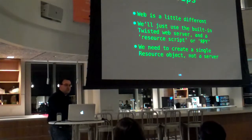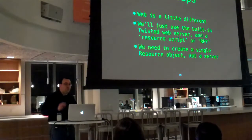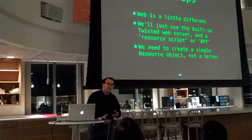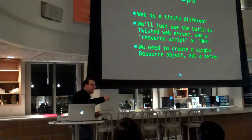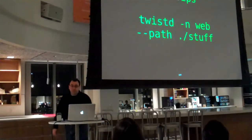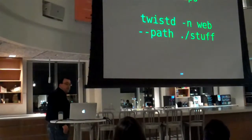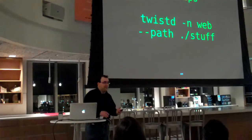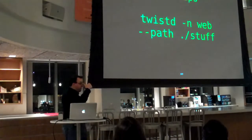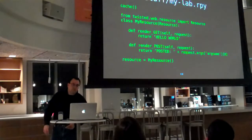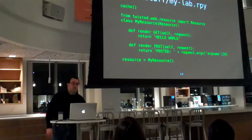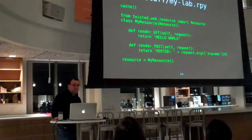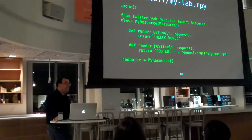Instead of creating an object which is a server or client connection — a protocol — we're creating a resource object, which is a web-specific object. IRC servers are broken down into channels and users, but web servers are broken down into resources, which are things identified by URLs. To get started with the web thing, you first want to run twistd web, probably with a --port flag unless you're root (and don't be root). Then you want a directory called stuff where you're going to put your resource script. These resources are pretty simple — you import twisted.web.resource.Resource, and then you implement methods that handle HTTP methods, so render-get and render-post handle GET and POST methods respectively.